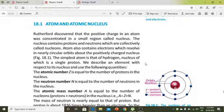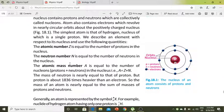Atomic number Z is equal to the number of protons. Neutron number N is equal to the number of neutrons. Atomic mass number A is equal to the number of nucleons.